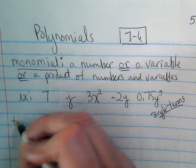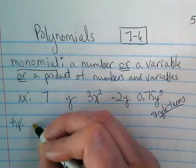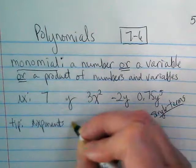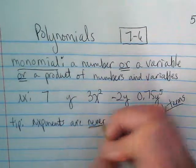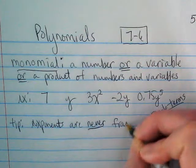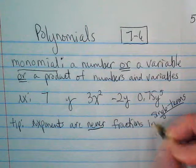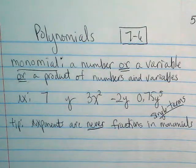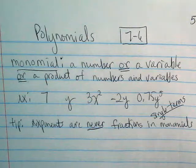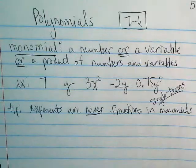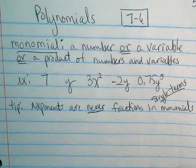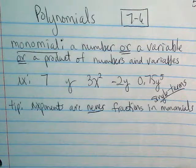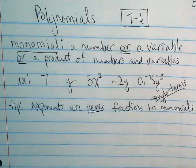I think of these as single terms. Following up on yesterday, here's a little tip. Exponents are never fractions in monomials. And if you think about it, that makes sense because when we have a fraction as our exponent, we turned it into that root, remember? So it becomes more complex than a monomial. Monomials are pretty simple.